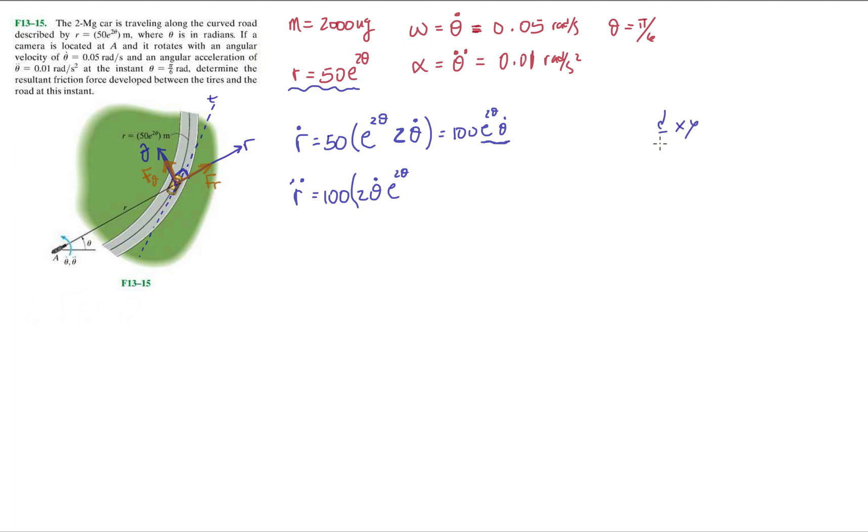So remember when we do, we're going to do a derivative of, let's say something like this, we're going to do dx/dt times y plus dy/dt times x. So it's similar to what we're doing here. We're doing what's the derivative of e to the 2θ, right, which is this, this, right, times θ dot. I'm sorry if you, you know, if you already understand this, just move on. But there's people that have to kind of follow it a little more slowly.